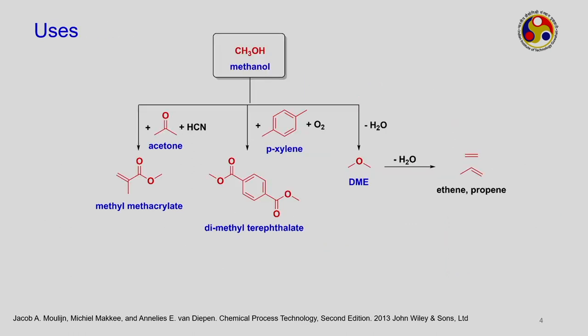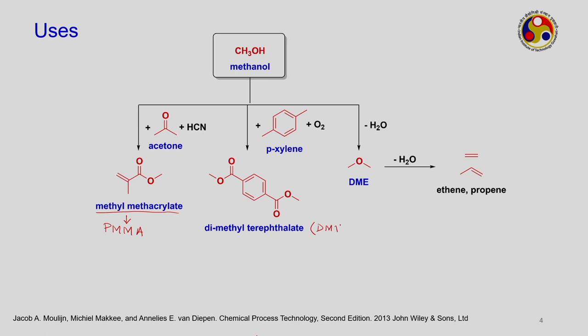Other uses of methanol: if you add acetone and hydrocyanic acid you form methyl methacrylate, a very useful monomer for PMMA — polymethyl methacrylate. Alternatively, adding xylene and oxygen to methanol gives dimethyl terephthalate, also called DMT, which is a useful precursor for the manufacture of PET — polyethylene terephthalate.